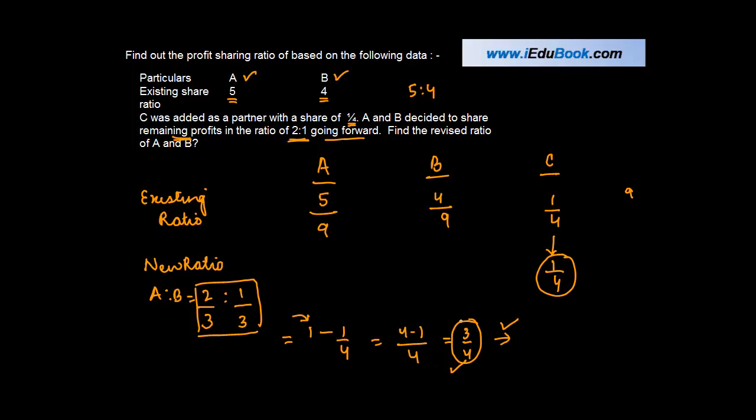Now once you know this, it becomes fairly easy. So what is the stake of A? Let me use a different color here. A is equal to 2 by 3 of the remaining profits, 2 upon 3 into remaining profits is 3 by 4, or 1 by 2. B is equal to 1/3 of the remaining profit 3 upon 4, which is 1 by 4. C we know how much was that. C was in any case getting 25% which is 1 by 4.